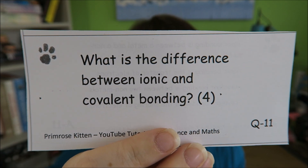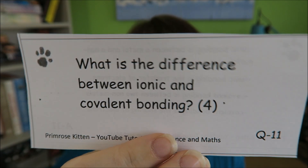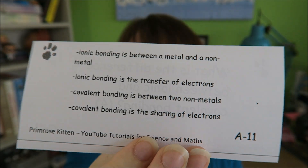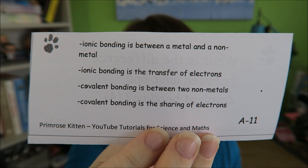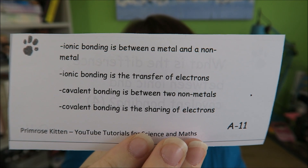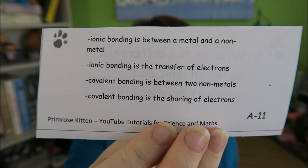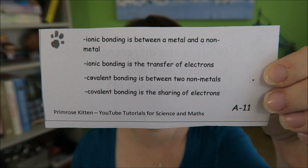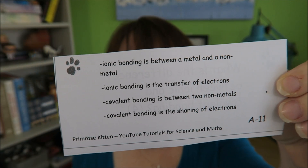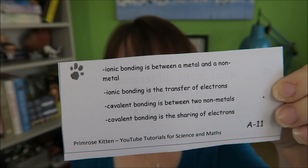What is the difference between ionic and covalent bonding? Ionic bonding is between a metal and a non-metal — it is the transfer of electrons. Covalent bonding is between two non-metals, and it is the sharing of electrons. You need to learn those. You can either go to my website, print the flashcards off, make your own flashcards, or just watch this video over and over again.